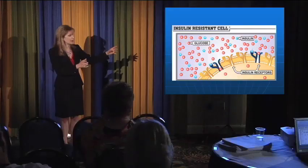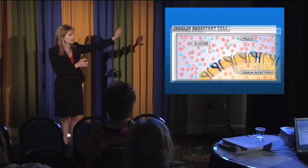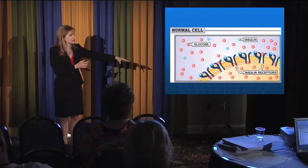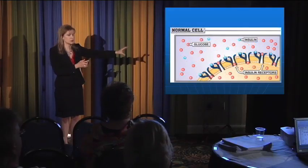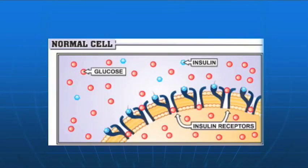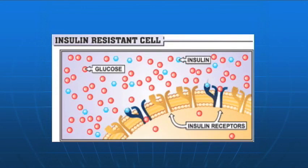Let's flip back to compare: in the normal situation versus insulin resistance, there's plenty of insulin, but it doesn't work properly, and there's lots of sugar outside the cell but not enough inside the cell.